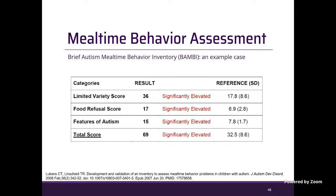Here is an example with one child who had significantly elevated mealtime behavior problems — a higher number means more problematic behaviors. There are three different categories, and this case had elevated numbers in all categories, indicating significantly elevated problems. The reference numbers come from typically developing children, so while many typically developing children also have some picky eating behaviors, we can see clearly that this child has more problematic behaviors at mealtime.